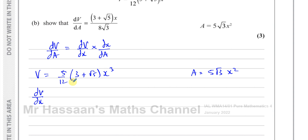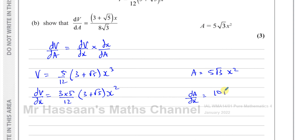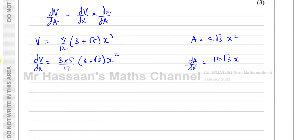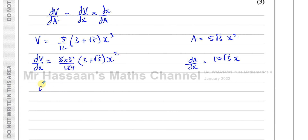dV/dx becomes 3 times (5/12)(3 + root 5) times x², which simplifies to (5/4)(3 + root 5)x². For dA/dx: differentiating 5 root 3 x² gives 2 times 5 root 3 times x, so dA/dx equals 10 root 3 x.